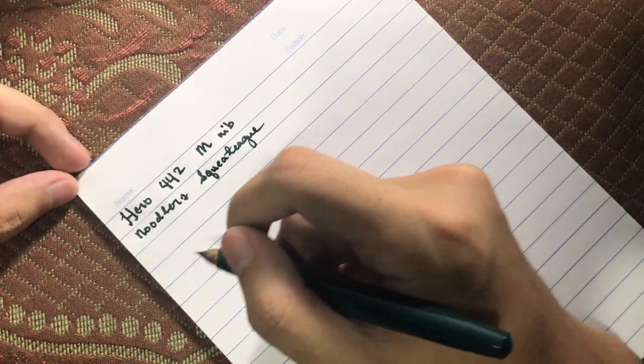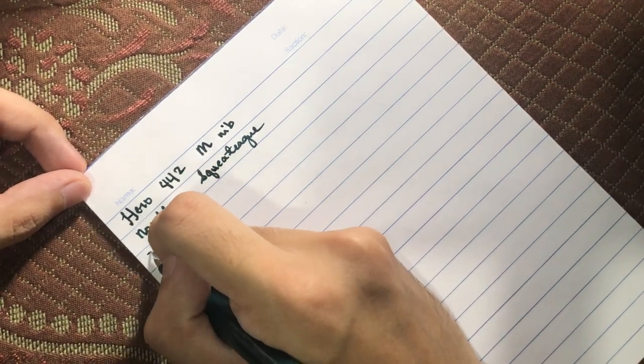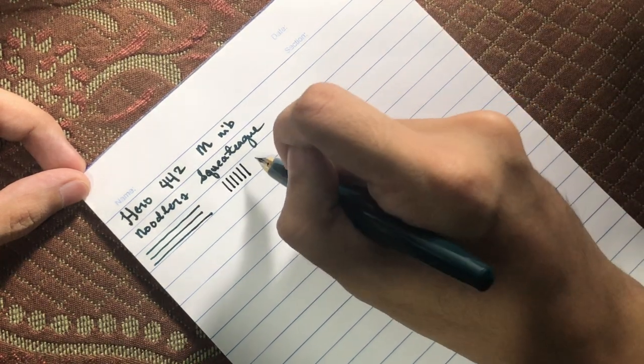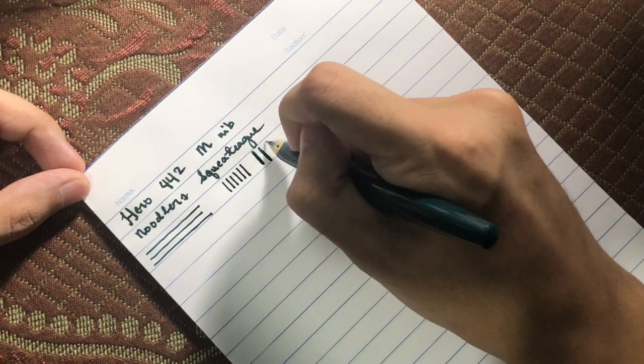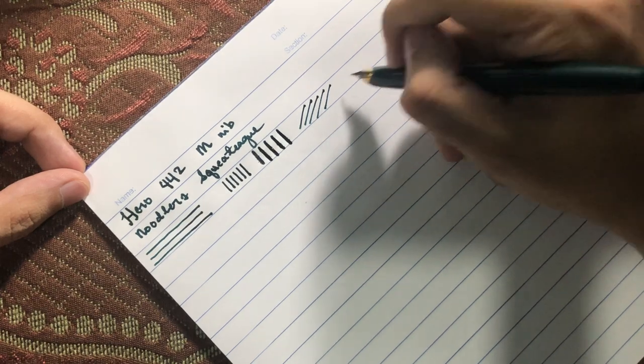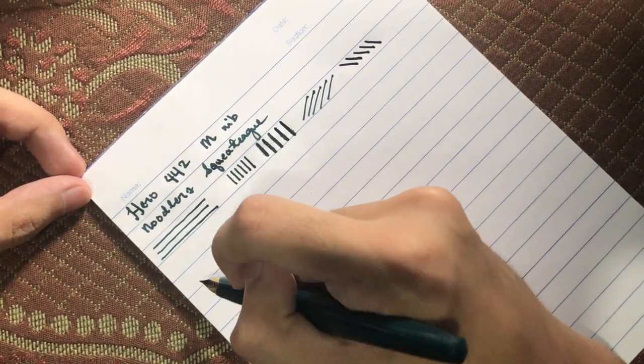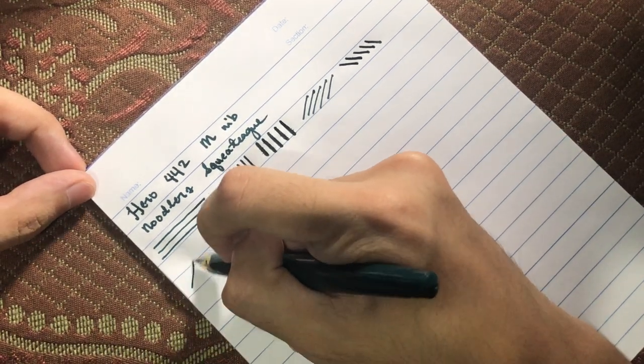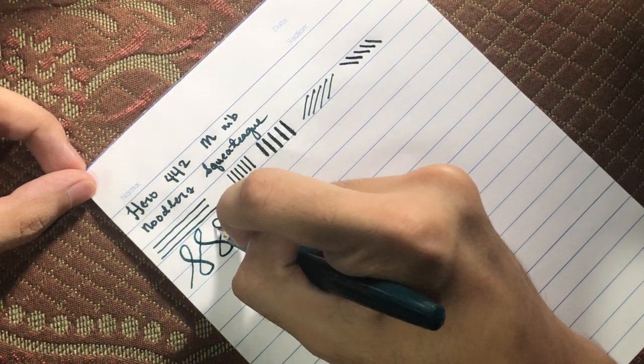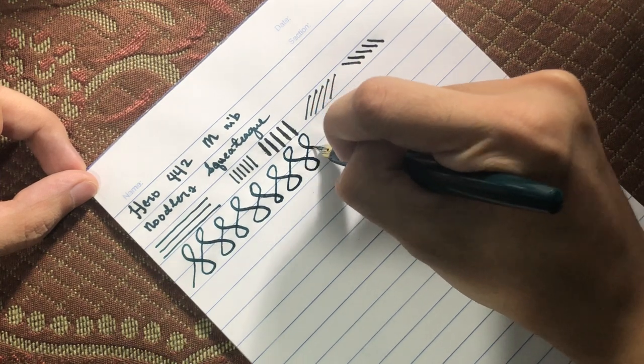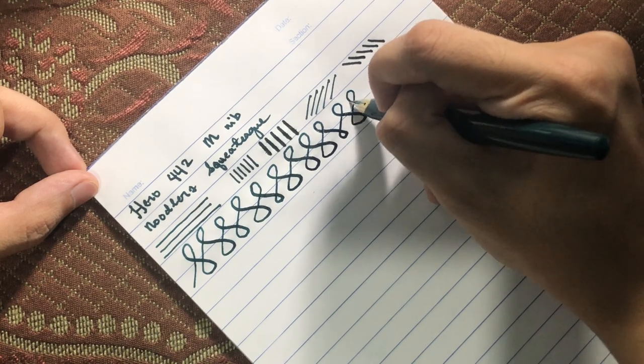Let's do some line testing first. Horizontally. I hope you can see the colors. Vertically. That is not flexed. If I'm going to flex it, the line can go as big as this. Diagonally and downwards diagonal. I'll also do some 8s to show you the line variation that it can create. I'm flexing whenever we're gearing towards the downwards strokes.